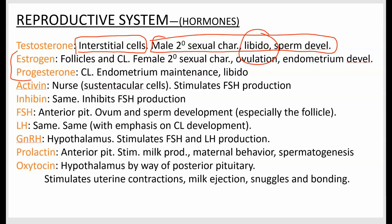Estrogen and progesterone are typically thought of as female hormones. They are made in the follicles and corpus luteum and promote female sexual characteristics like breast development and bone structure. Estrogen is also involved in ovulation and development of the endometrium — the endometrium gets thicker with exposure to estrogen. Progesterone is released after ovulation and functions to maintain the endometrium.